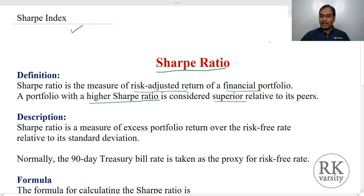Suppose you have two portfolios — Portfolio 1 and Portfolio 2. For Portfolio 1, your Sharpe Index is 1.25, and for Portfolio 2, the Sharpe Index is 1. Among these two, Portfolio 1 with the higher Sharpe Index value of 1.25 is considered superior, and Portfolio 2 is the inferior one.